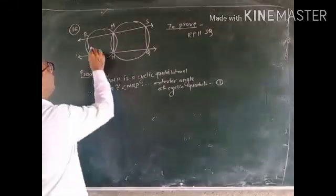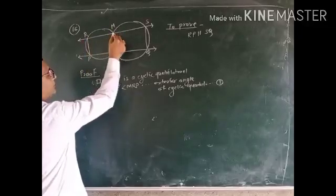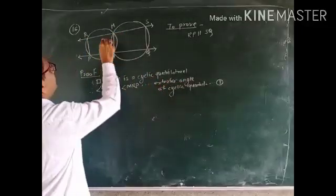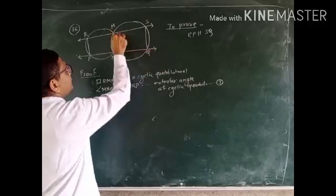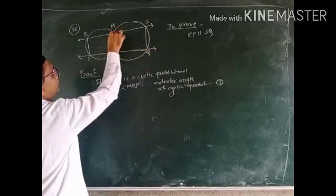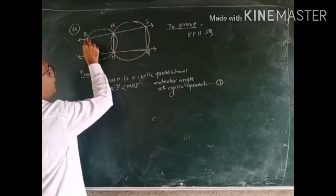See, quadrilateral RMNP is a cyclic quadrilateral. Therefore, angle MNQ is an exterior angle of this cyclic quadrilateral MNPR.